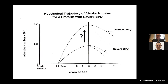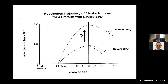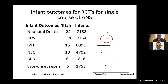Regarding the lung: we used to think that severe BPD was a deficit in alveolarization, but it's probably a delay. At term or as young children, these kids appear to have normal alveolar numbers based on MRI studies. The question is how they age. The severe BPD infants probably age more rapidly than normals, and even normal preterm infants age more rapidly than term infants in terms of airways and alveolar number.